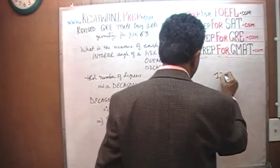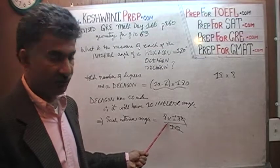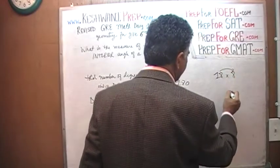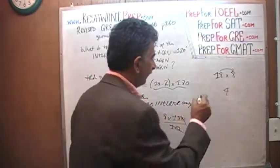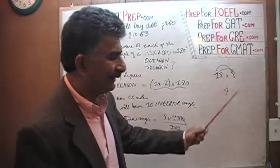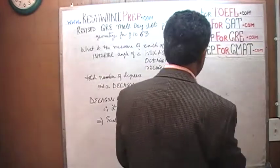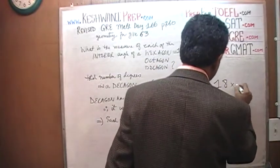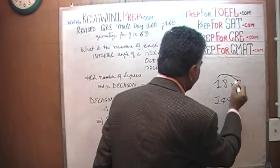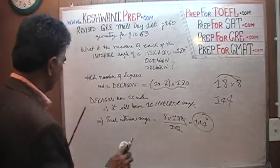You just cross out the 10 with the 0, and it's simply 18 times 8. 8 times 8 is 64 — write 4, carry 6. Then 10 times 8 is 80, plus 6 is 86, giving 8 ones are 8, 8 plus 6 is 14. So the answer is 144 degrees. Each interior angle of a decagon is 144 degrees.